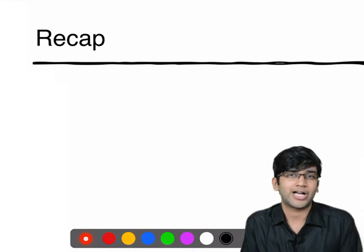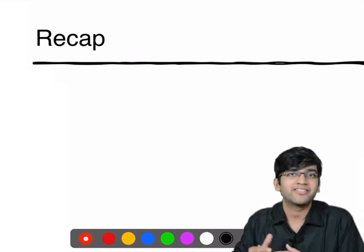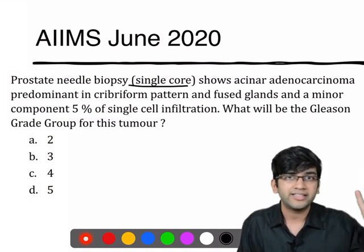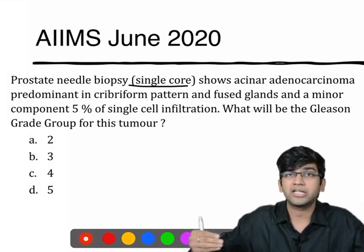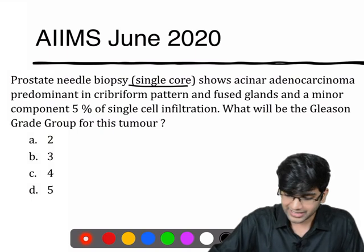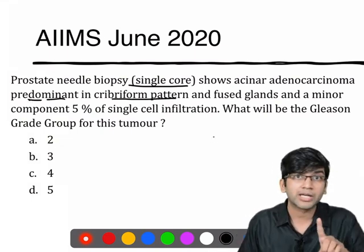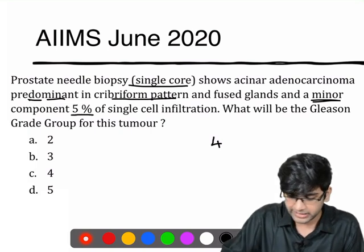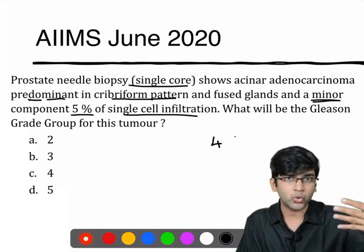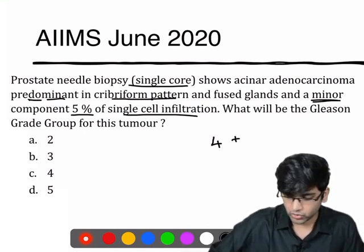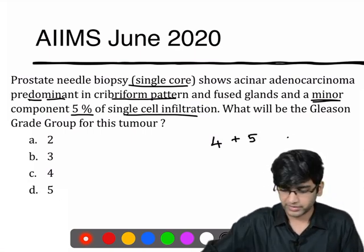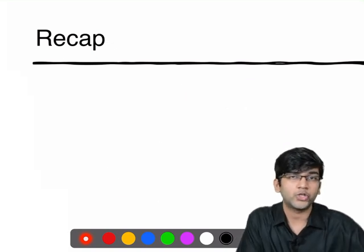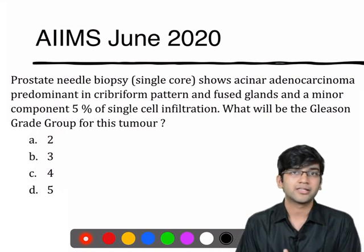Now let's venture into a question asked in the AIIMS exam. Prostate needle core biopsy — that's the first hint, because we score needle biopsy differently from radical prostatectomy. The biopsy shows an acinar adenocarcinoma with a predominant cribriform pattern and fused glands — both score four — and a minor component of five percent with single cell infiltration, which is score five. So the predominant pattern is four and the worst pattern is five, giving a score of four plus five, which equals nine. A score of nine or ten is Gleason grade group five.